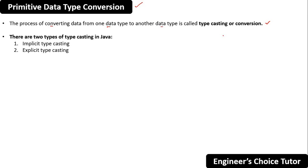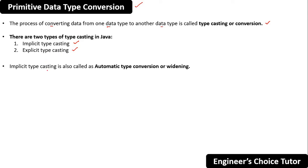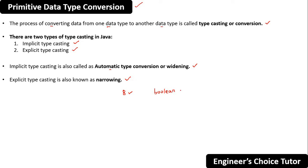There are two types of casting in Java. The first is implicit typecasting and the second is explicit typecasting. Implicit typecasting is also known as automatic type conversion or widening, and explicit typecasting is also known as narrowing. Note that these concepts are not applicable for the boolean data type — typecasting does not apply to boolean.